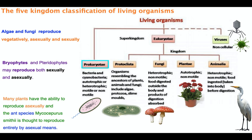For viruses, their replication process is far more complex and interesting than these cellular organisms. Algae and fungi can reproduce asexually and sexually. Vegetative reproduction is a subgroup of asexual reproduction. Bryophytes, meaning moss-like plants, and pteridophytes, meaning fern-type plants, may reproduce both sexually and asexually. Most plants also have the ability to reproduce both asexually and sexually.